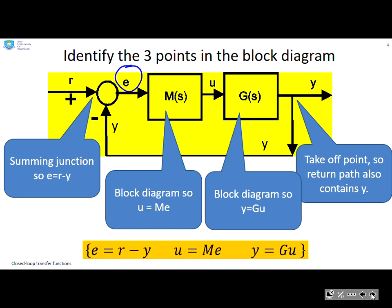So in summary, analyzing this block diagram, we end up with three equations: e equals r minus y, u equals me, and y equals gu.